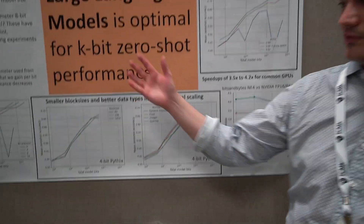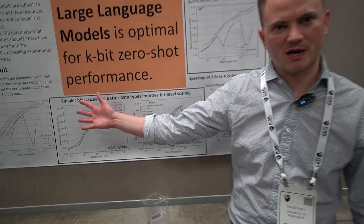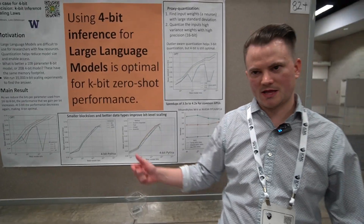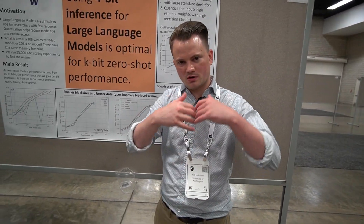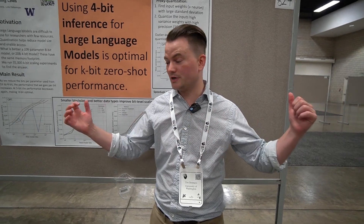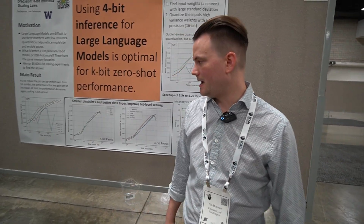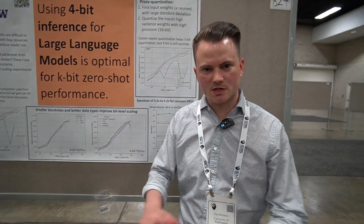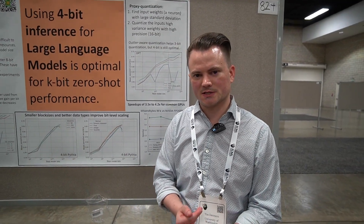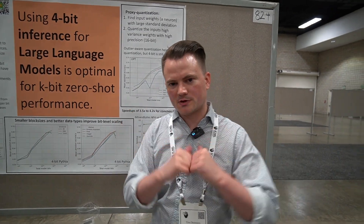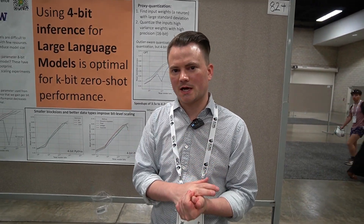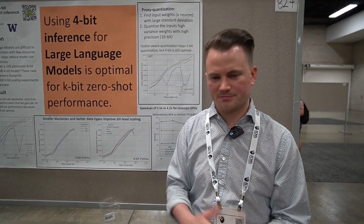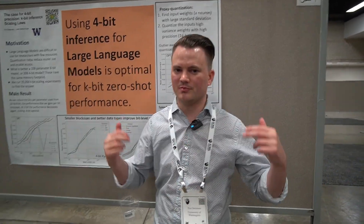To summarize, through a large number of experiments we have shown that if you want the highest information density per memory footprint, the best you can do — looking at the weight matrices — is 4-bit quantization with a small block size and a floating point data type. That combination gives you the best model for a given memory footprint.